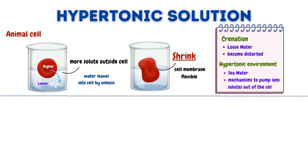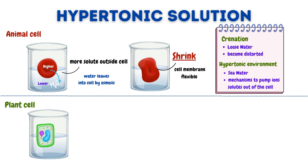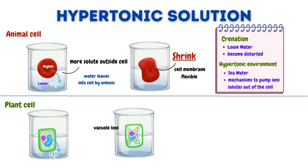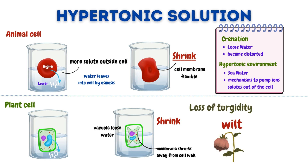When a plant cell is placed in a hypertonic solution, or when we don't water plants, water moves out of the cell through osmosis from higher to lower concentration. As water leaves the cell, the central vacuole loses water and begins to shrink. The cell membrane also shrinks away from the cell wall, and the cell loses turgor pressure. This loss of turgidity can cause the plant to wilt, as the cells are no longer able to provide the structural support needed to keep the plant upright.